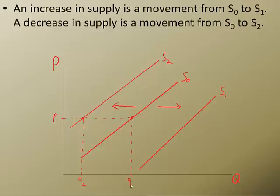If we come over here and we find out the quantity supplied off of the curve S0, we can get this quantity here which is Q0. And if we take the same price over to the curve S1 then we get, come down here, Q1.